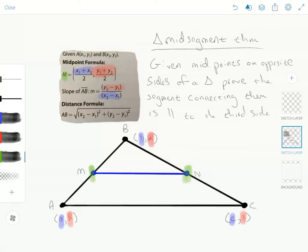Okay, this is part one of a two-part video on the triangle mid-segment theorem. In it we're going to prove one of the first propositions of the triangle mid-segment theorem that line segment MN is always going to be parallel to line segment AC if M and N are midpoints of their respective sides of the triangle.